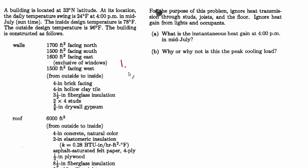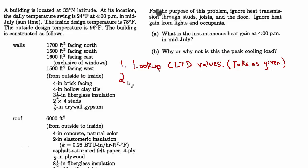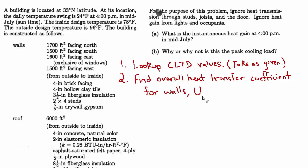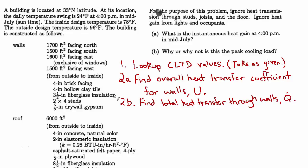The plan of attack: first, we look up the cooling load temperature difference values. On actual test problems they typically wouldn't require looking this up in the ASHRAE Fundamentals, so we'll take them as given. Next, we'll look at the walls, consider the materials, thicknesses, and resistance values, and figure out the overall heat transfer coefficient U for the walls — call this step 2a. Then in step 2b we find the total heat transfer through the walls, Q-dot for the walls. Similarly, in steps 3a and 3b we find U and Q-dot for the roof.